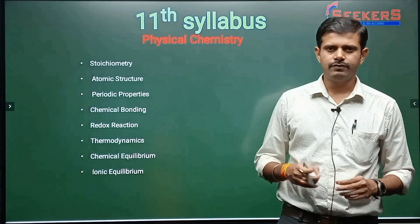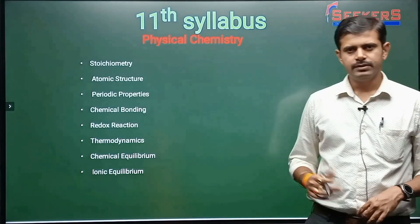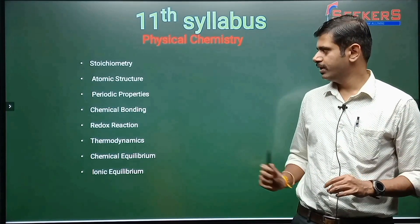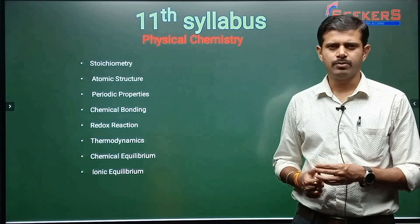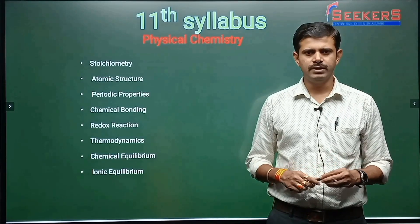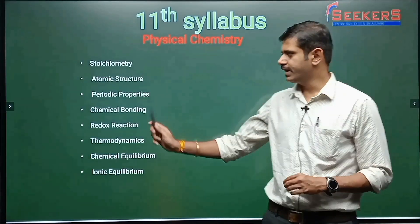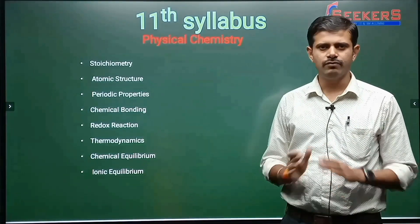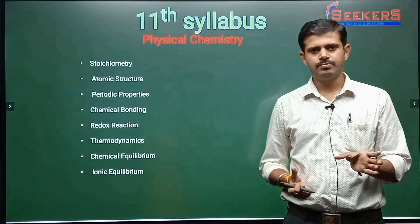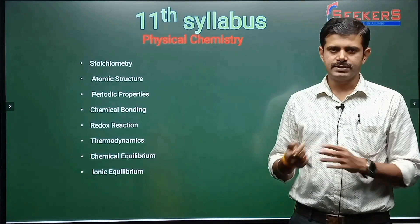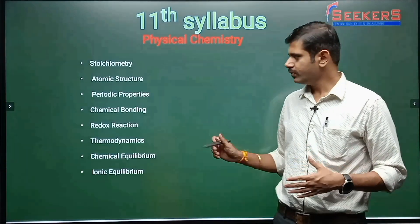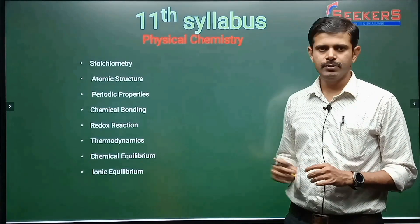The next chapter is atomic structure — Rutherford model, different models, and quantum numbers. After that, the third chapter is periodic properties. Some people consider it part of inorganic chemistry, but we'll take it here because it gives a brief overview of each element — which period it's present in, and what are its properties.